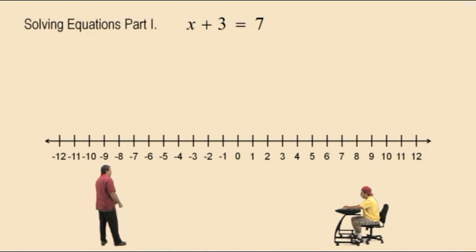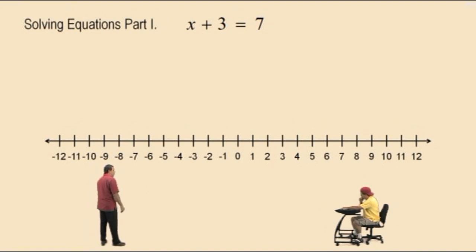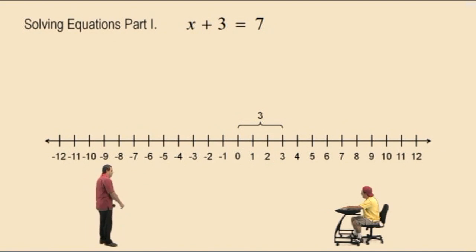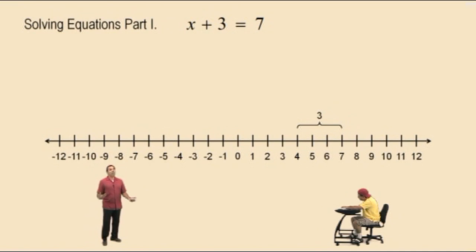Okay, Charlie, let's do another one right here! This equation is asking you what number x do you add 3 to to get 7? So what is it, Charlie? 4! That's right! So let's look at our number line here — you should be able to see 4 plus 3 is 7, so by inspection the answer is x equals 4.